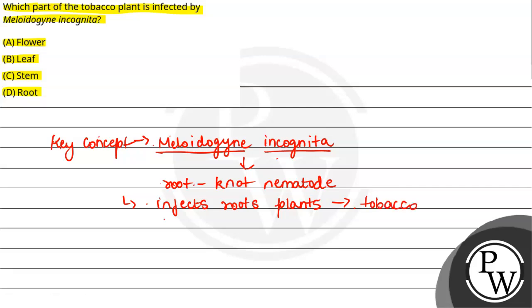It forms galls or knots in the roots. These galls or knots form in roots, which causes reduced plant growth. Basically, the plant cannot grow properly.